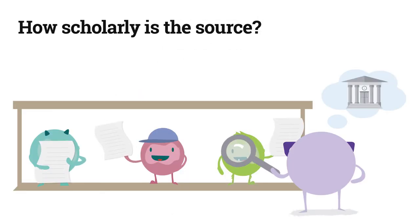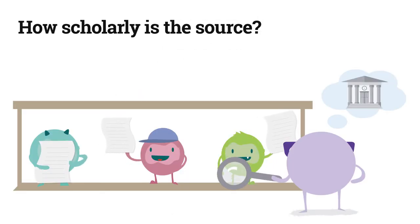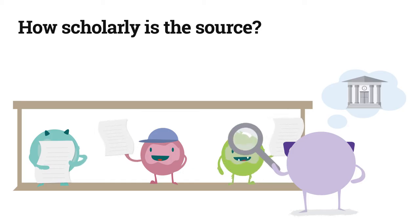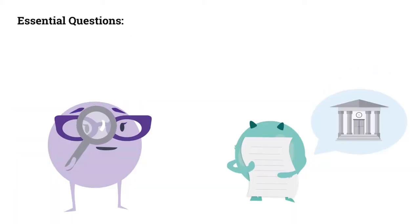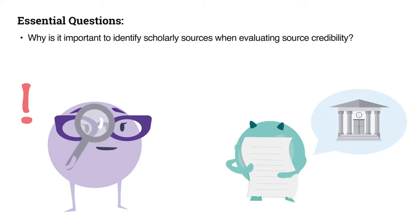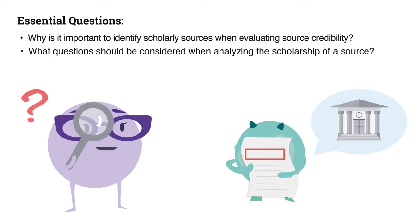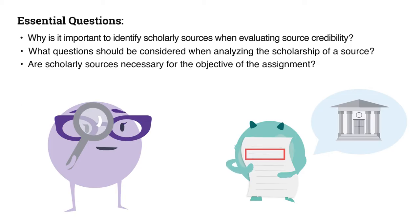In this lesson we will discuss how to determine if a source is scholarly and how that may impact credibility. In particular, the essential guiding questions for this lesson are: why is it important to identify scholarly sources when evaluating source credibility? What questions should be considered when analyzing the scholarship of a source? And are scholarly sources necessary for the objective of the assignment?